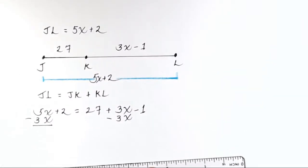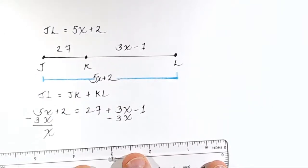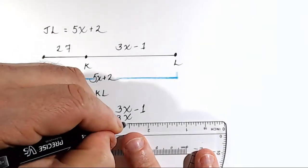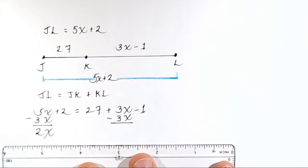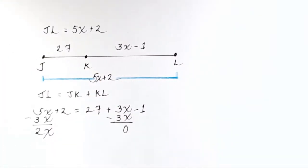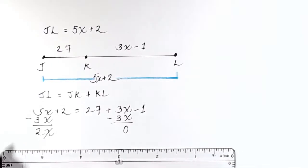Okay, so what is 5X minus 3X? Be careful here, people. The X is going to be there. So you just subtract the coefficients. 5 minus 3 is 2. On the right side of the equation, you've got 3X minus 3X. Well, anything minus itself is just 0.